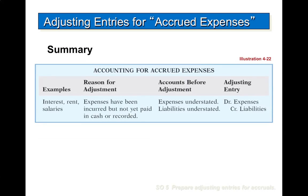In summarizing accrued expenses, examples include interest, rent, and salary. The reason for adjustment is because the expenses have been incurred but not yet paid in cash or recorded. The accounts before adjustment have expenses understated and liabilities understated. So the adjusting entry is to debit expenses and credit liabilities.